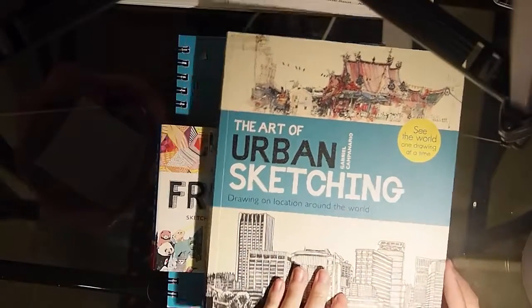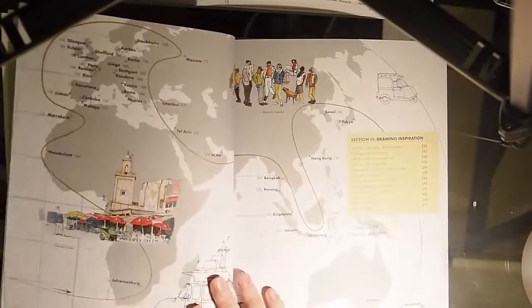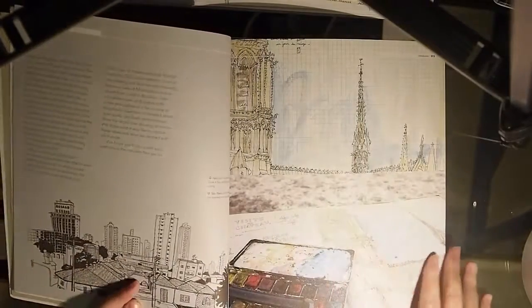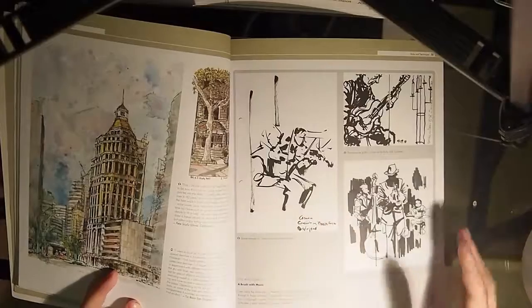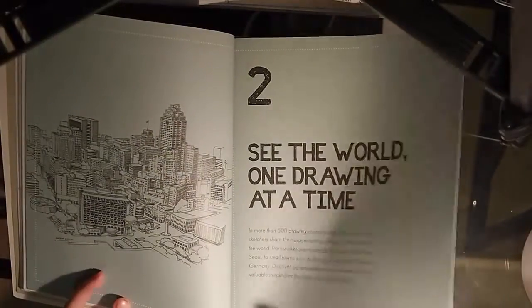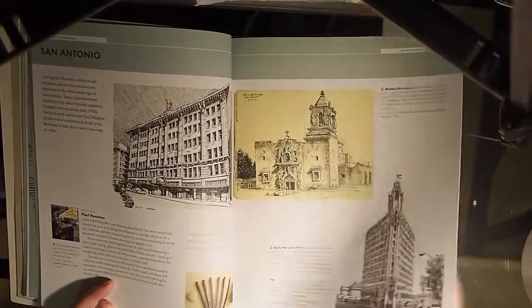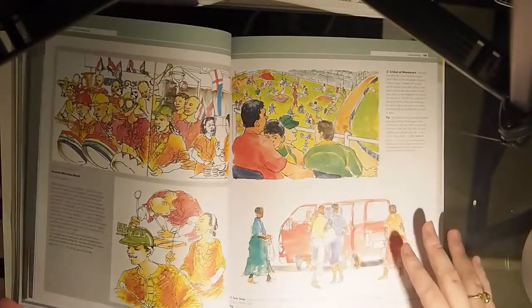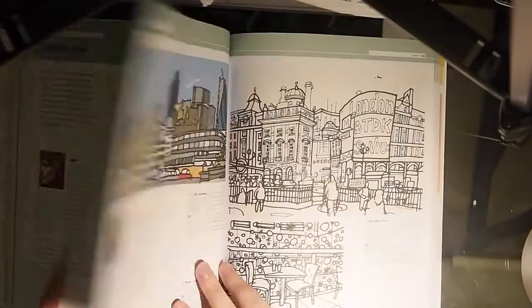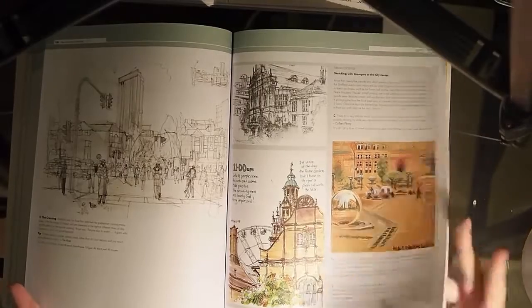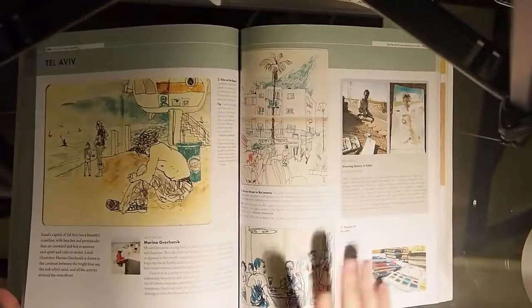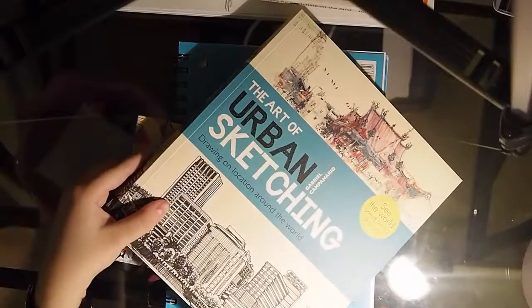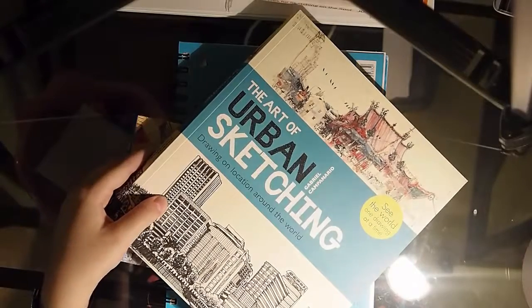This book is called The Art of Urban Sketching, Drawing in Location Around the World. Again I did not find this as a how-to book as opposed to a wow look how pretty all those drawings are. The art really takes up most of the pages here. It gives you tips and things about the artists and where they were. It's all different artists. By the time I was done with that picture I would be the best people drawer ever.